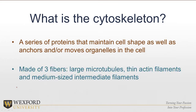The cytoskeleton is made up of three fibers: large microtubules, thin actin filaments, and medium-sized intermediate filaments. With microtubules, we're going to come back to this concept when we get to cell division and cell replication — that'll be a really important concept later on. We have several different types of proteins that come together to form this scaffolding, this framework, and allow movement within the cell.